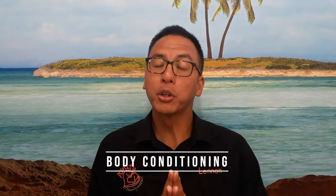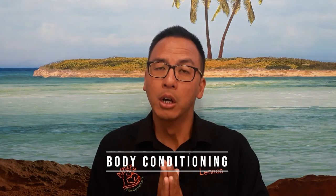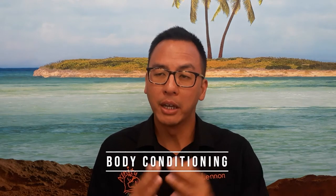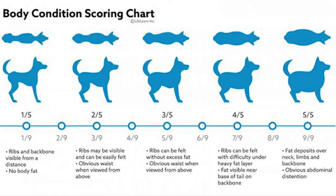So body conditioning — what does that mean? There is a particular scale called a body conditioning score. The grade is one to nine. There are various scales out there, but the one we commonly use is one to nine, where one is too skinny and nine is too fat and five is ideal.